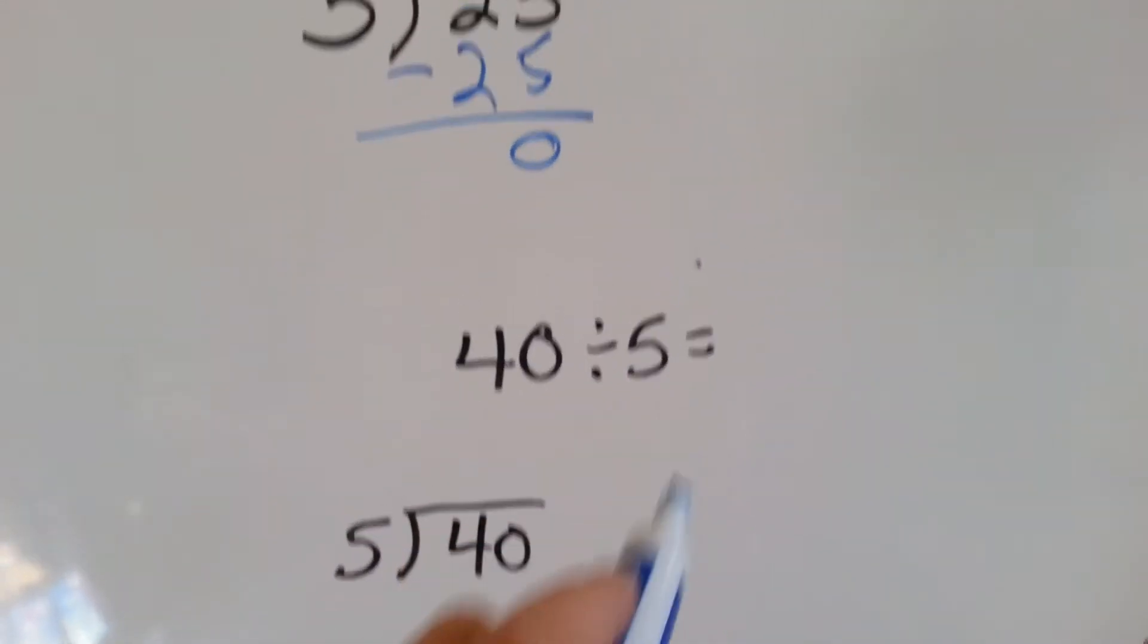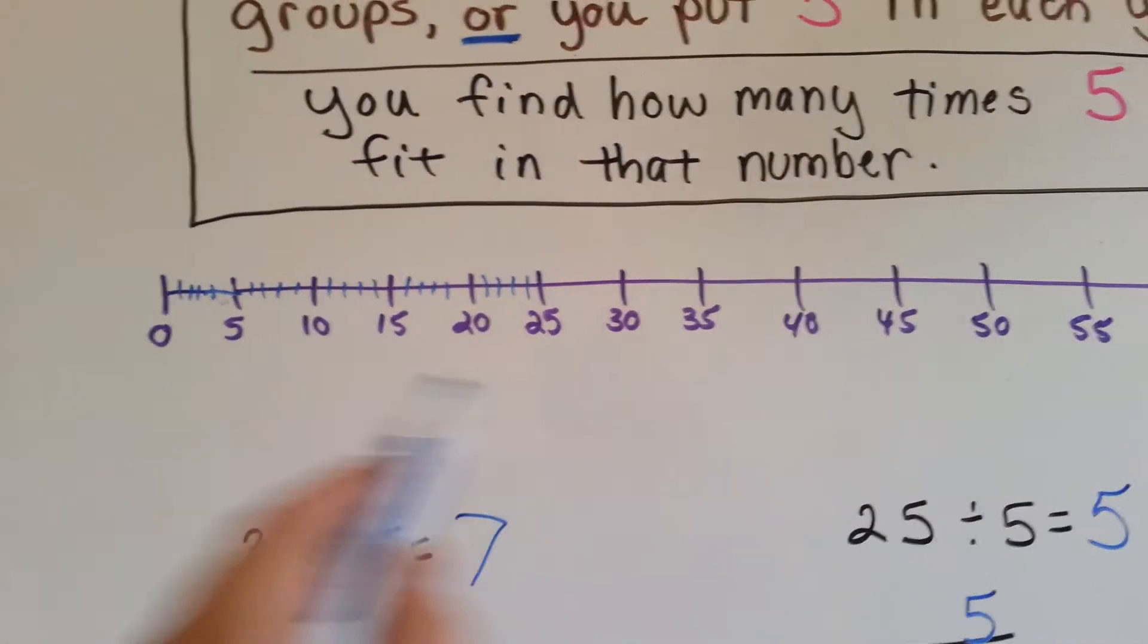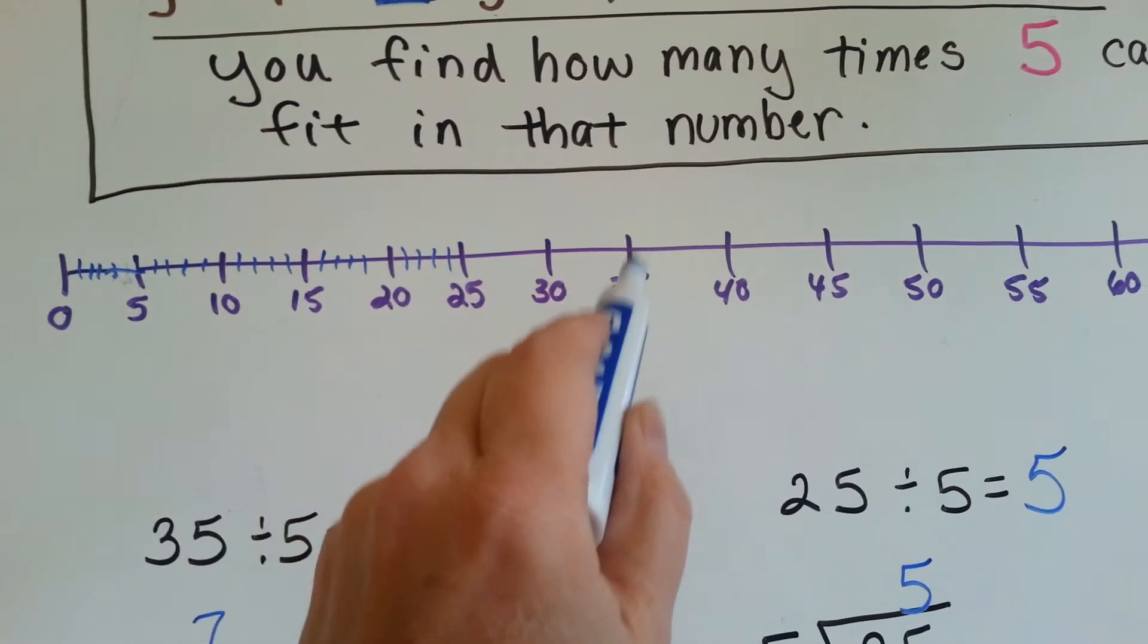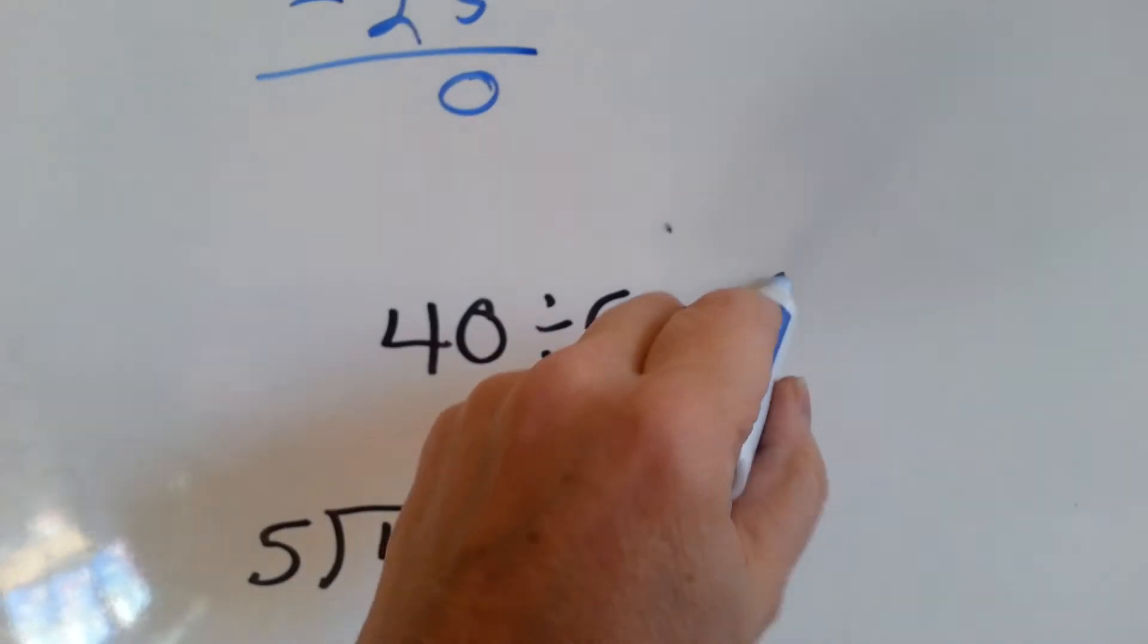40 divided by 5. Alright, well here's 40. Let's see how many times we skip. 1, 2, 3, 4, 5, 6, 7, 8. 40 divided by 5 is 8.